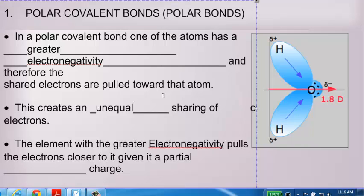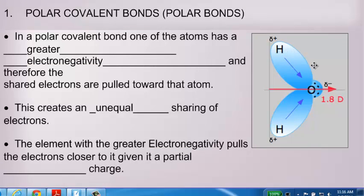If you take a look at this picture that I have here on the screen, in this picture, oxygen has an electronegativity of something like 3.4.